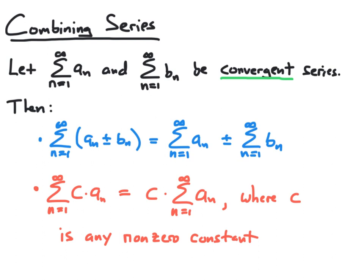These two properties can be used in two different ways. First, we can use them to break down a more complicated series into the sum, difference, and scalar multiple of simpler series — replacing the expressions on the left-hand side of each equation with the expressions on the right-hand side. The second way is by combining series together by adding, subtracting, or multiplying by constants to form new series applicable to whatever situation we're working on.